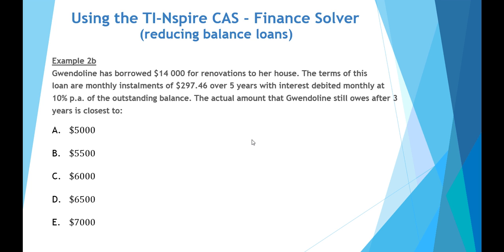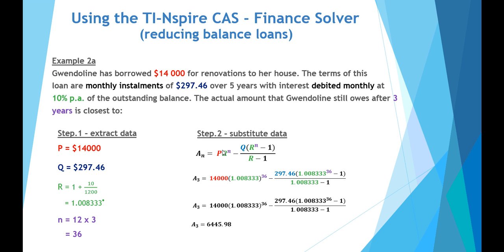Final part is to work out the actual amount that Gwendolyn still owes after three years. Again, we have an equation. It comes out here. If we use the annuities formula of $6,445.98, however, beware this is using a growth rate of 1.008333, when in fact it is a three recurring. So that will make a slight impact, as we'll see when we do this calculation using our financial solver.